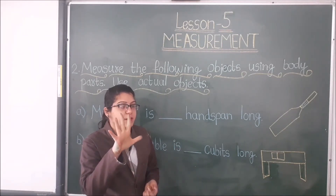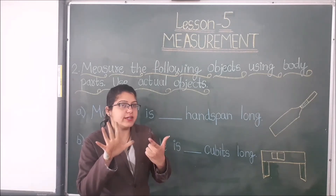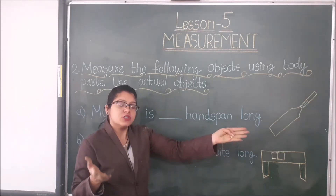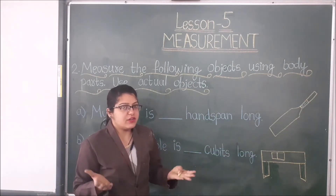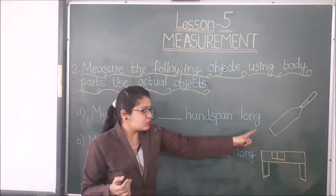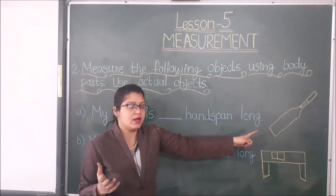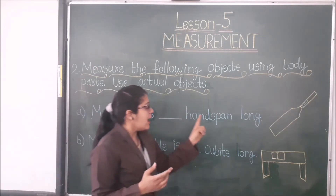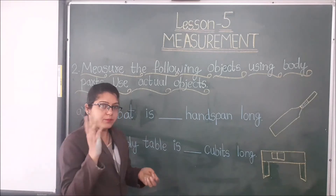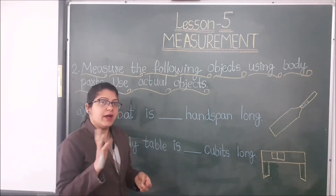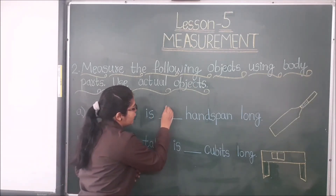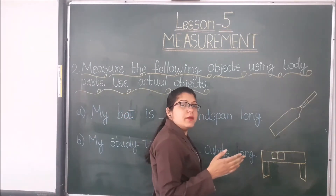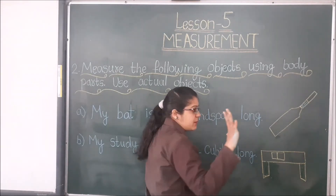My hand span is bigger than your hand span, and my cubit is bigger than your cubit. So answers may be different. You have to use the actual objects and find out your answer. For example, my bed is 4 hand spans long.